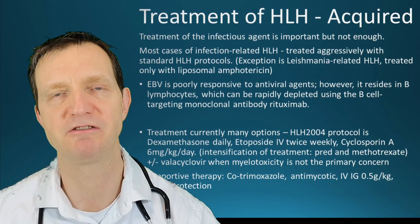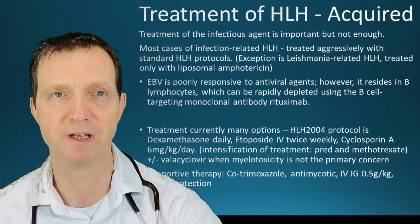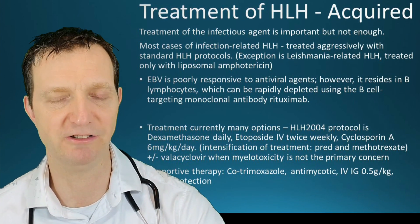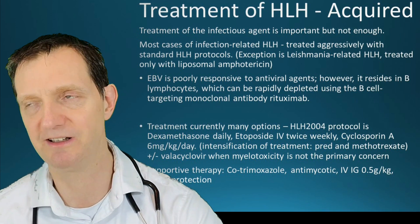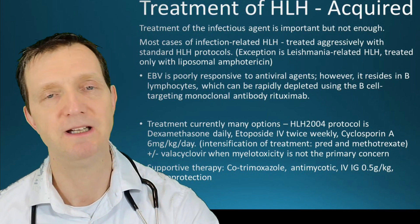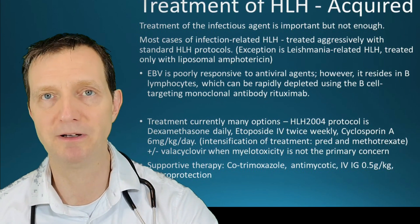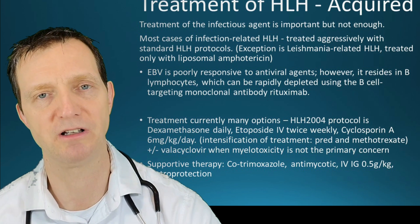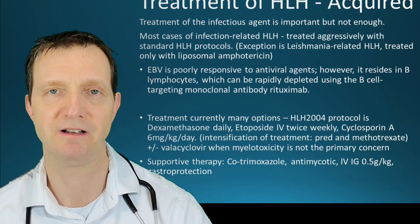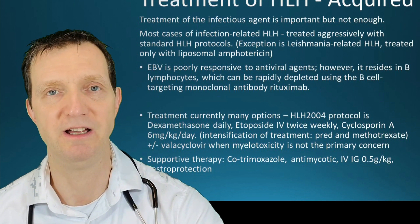The exception is leishmania-related HLH, which is fairly rare and only treated with liposomal amphotericin. EBV responds poorly to antiretroviral agents, so aciclovir, valaciclovir, ganciclovir, and similar drugs don't really work for EBV. However, EBV lives in epithelial cells or B lymphocytes, which can be rapidly depleted using a B-cell targeting monoclonal antibody — rituximab — especially if the individual has a detectable or high EBV viral load.